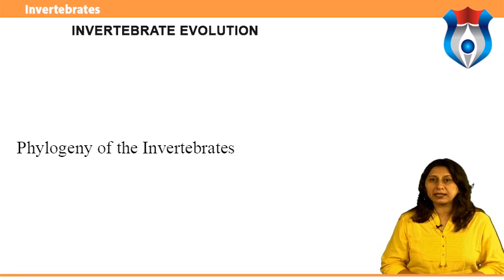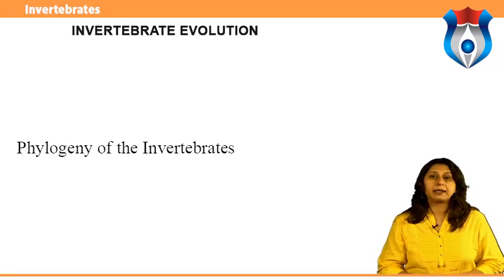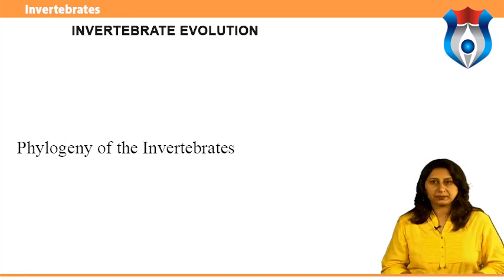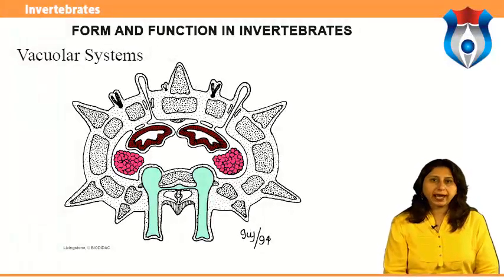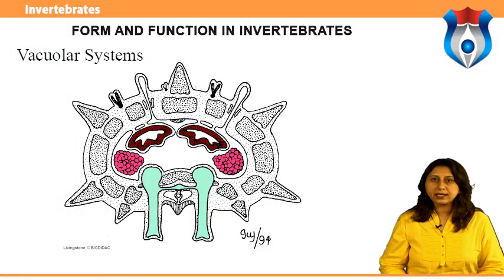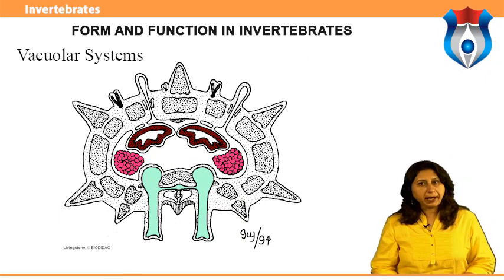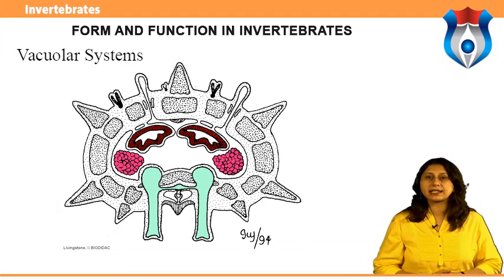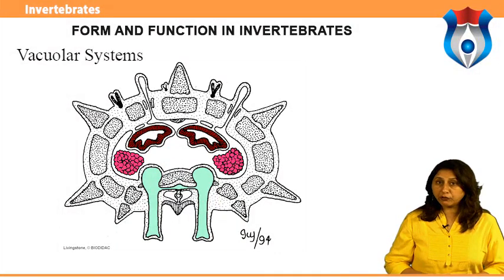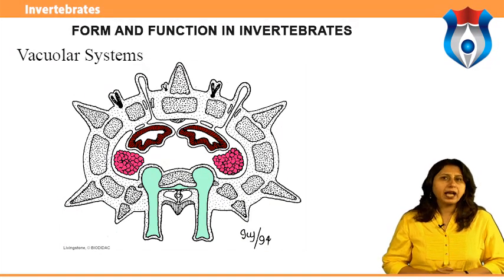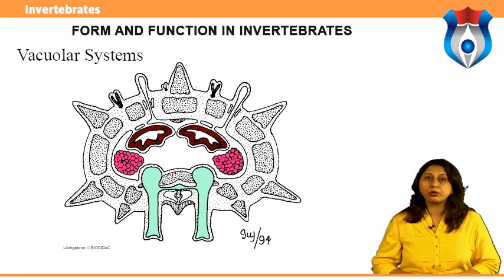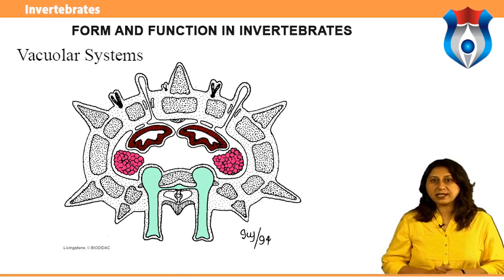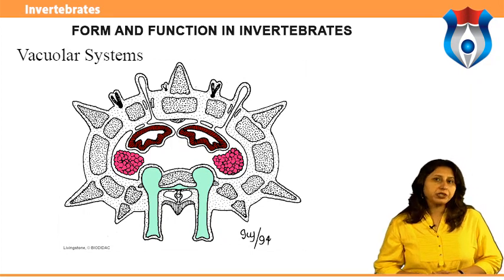Myelin has arisen independently at least three times — in annelids, arthropods, and chordates — providing a remarkable example of convergent evolution. Feeding and digestion — vacuolar systems: unicellular organisms that ingest food particles via vacuoles rely on intracellular digestion. The enzymes catalyzing this digestion are held in special packets called lysosomes. The lysosome membrane is impermeable to these enzymes. Soon after a food vacuole forms, a lysosome fuses with it, forming a digestive vacuole where food material and enzymes are mixed.